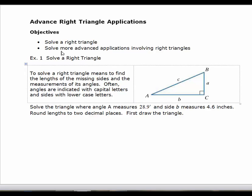The first example says to solve the right triangle. If it's a right triangle, you have to be given two more pieces of information. Basically, in order to get all three sides and all three angles you need three pieces of information total. So we know that angle A measures 28.9 degrees and side b measures 4.6 inches, and we want to find all the missing pieces.